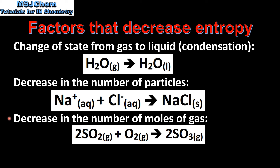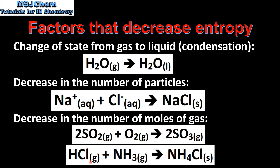Next is a decrease in the number of moles of gas. In this reaction we have three moles of gas in the reactants and two moles of gas in the products, which is a decrease in entropy. In our last example we have two moles of gas forming one mole of solid. Solids have a lower entropy than gases, therefore it's a decrease in entropy.